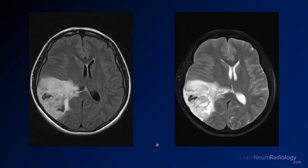On MRI, you have a FLAIR hyperintense mass involving much of that same area, with pretty well-defined margins. There are central areas of low FLAIR signal that are very dark. On T2-weighted imaging, this just highlights that dark area, and those correspond to the areas of calcification seen on CT.